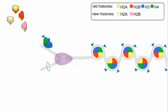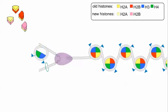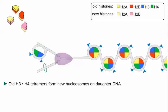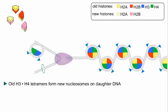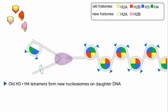The H3-H4 tetramers from the old nucleosomes begin to form new nucleosomes on the daughter DNA molecules with which they are associated, soon after the replication fork passes.